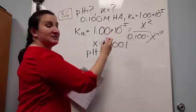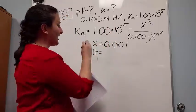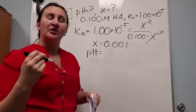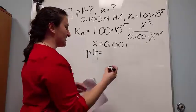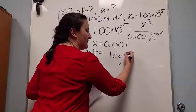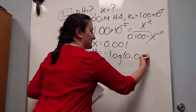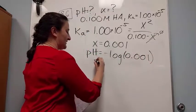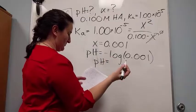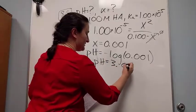Remember, this is an acid, so our x for acids in our Ka equation equals our hydrogen ion concentration. So my pH equals negative log of x, 0.001, which means my pH equals 3.00.